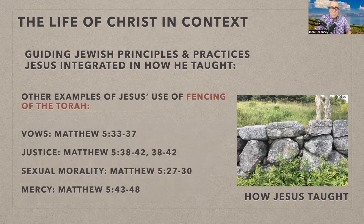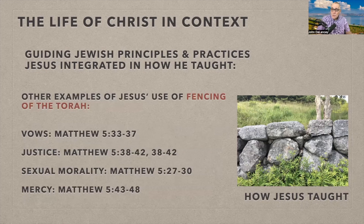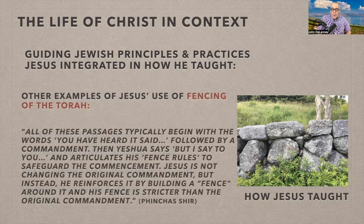Jesus used this fencing of the Torah about vows, justice, sexual morality — 'do not look upon a woman lustfully; if so, you have already committed adultery in your heart' — and mercy as well, all in Matthew 5, the Sermon on the Mount. All of these passages typically begin with 'you have heard it said,' followed by a commandment. Then Jesus says 'but I say to you' and articulates his fence rules to safeguard the commandment. Jesus is not changing the original commandment but reinforcing it by building a stricter fence around it.